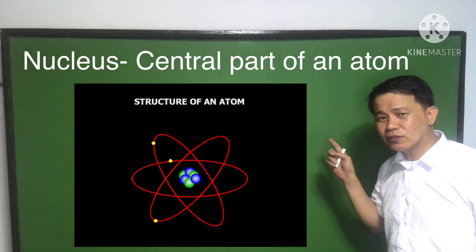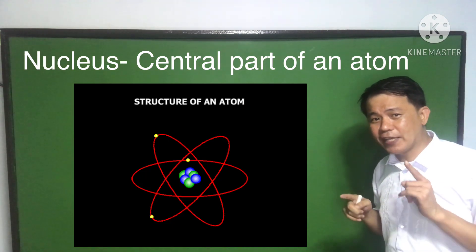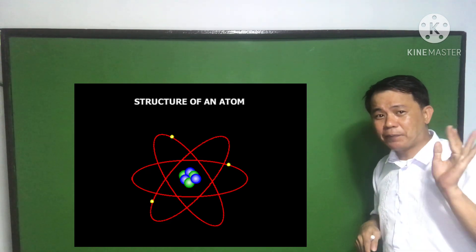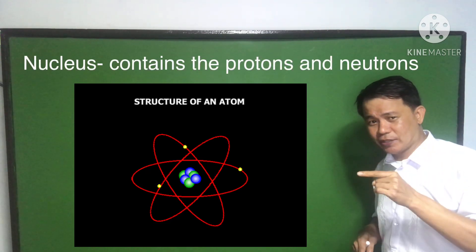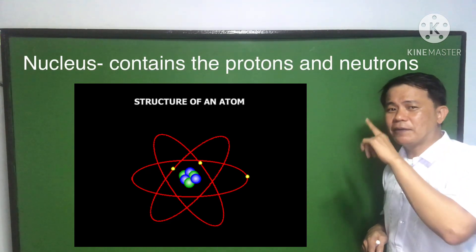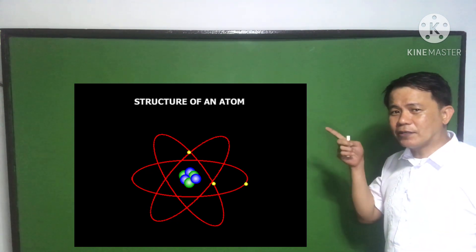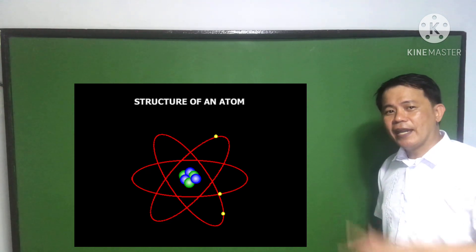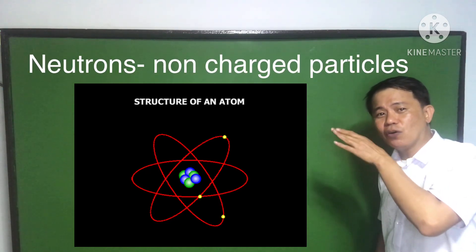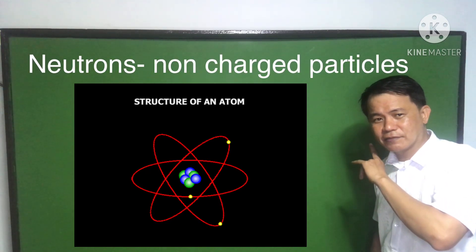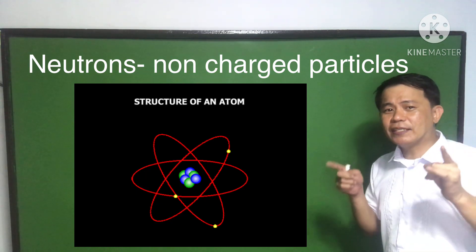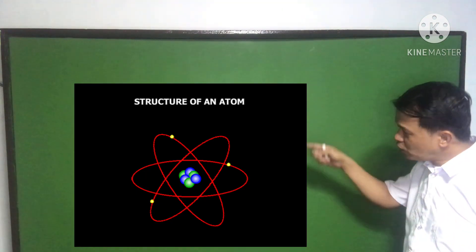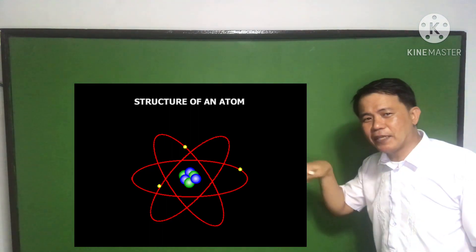The nucleus is the central part of the atom. This is where you can find the protons and the neutrons. The protons are the positively charged particles, and the neutrons are the no-charge particles. The nucleus occupies much of the space of the atom.